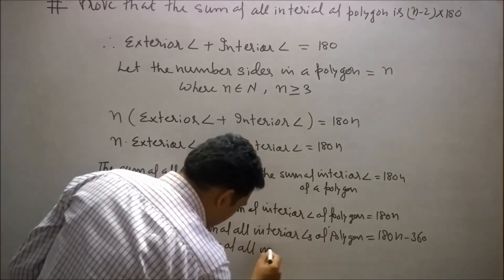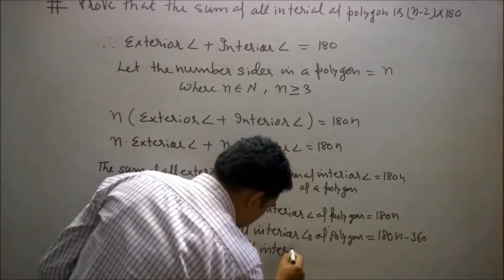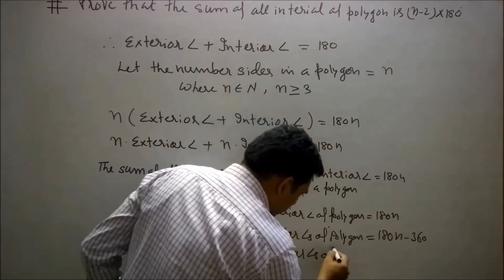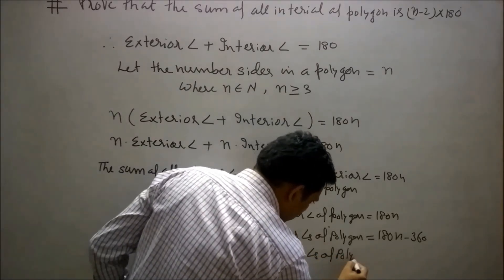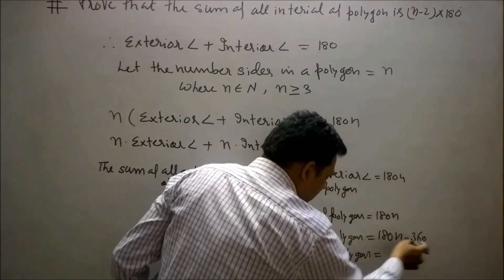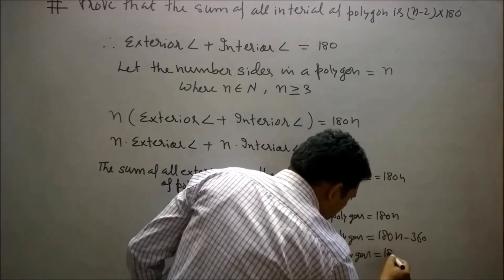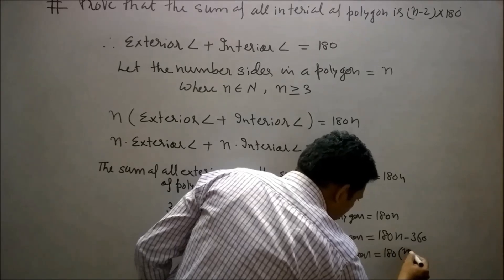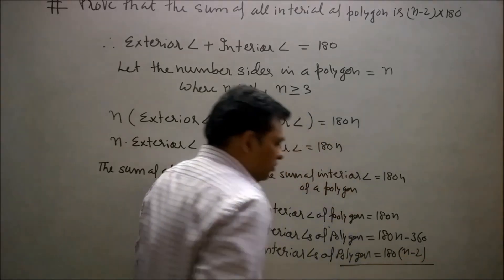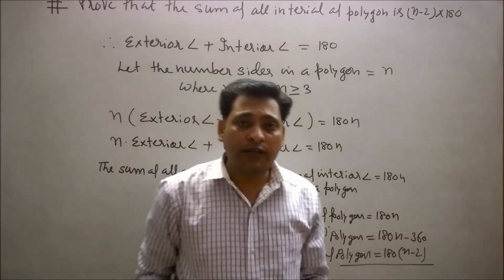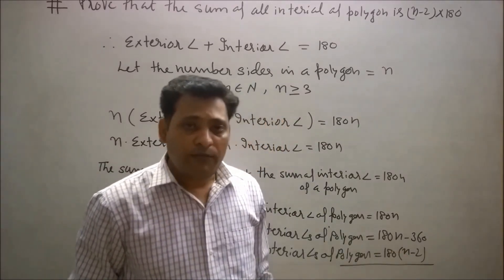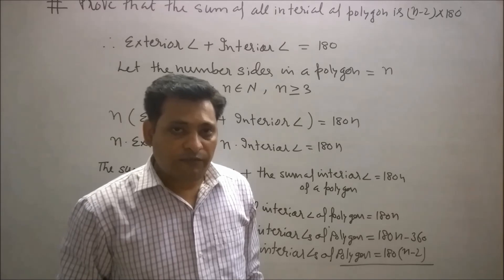Taking 180 as a common factor: the sum of all interior angles of a polygon = 180(n − 2). So we have proved that the sum of all interior angles is always 180(n − 2).